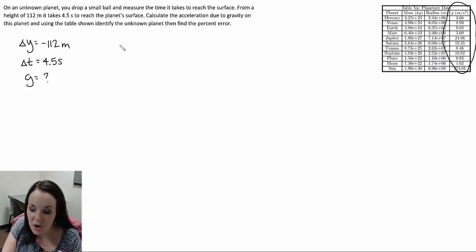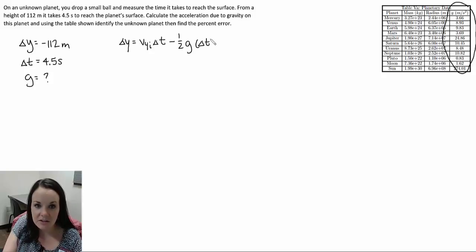Let's start by calculating g. We can use one of our kinematic equations. The best one to choose is delta y equals v_i times delta t minus one-half g times delta t squared.